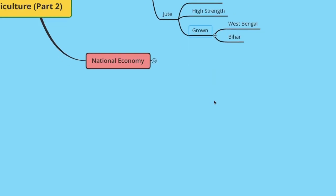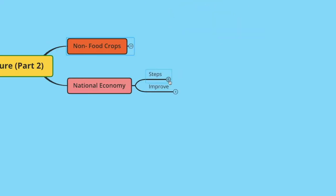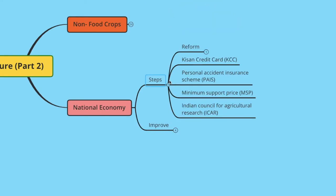Moving on to national economy, let's look at the steps taken by the government to provide facilities to farmers. We have the Kisan Credit Card, Personal Accident Insurance Scheme, Minimum Support Price, and the Indian Council for Agricultural Research. These are the reforms by the government to encourage and support agriculture.